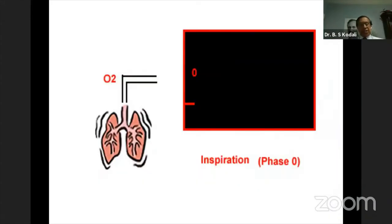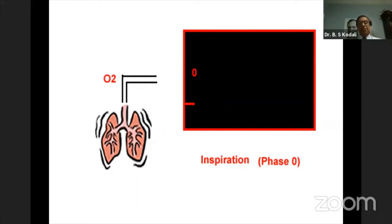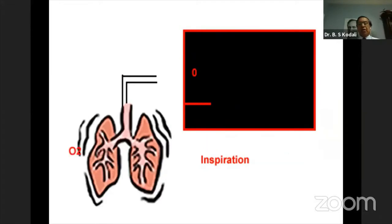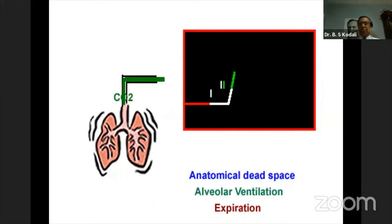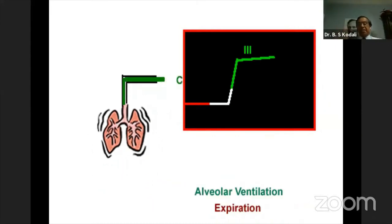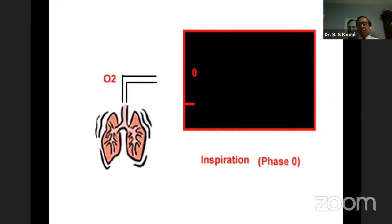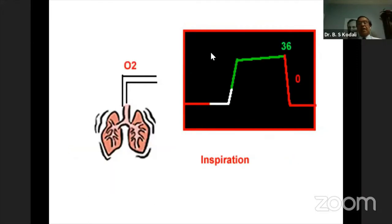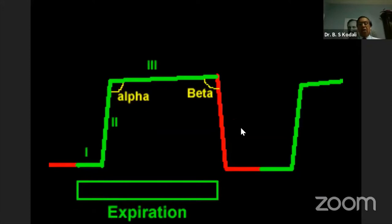Understanding the physiology of capnography makes it much easier to apply clinically. When you breathe out, initially there is no CO2 because those are dead space gases. Then dead space gases mix with alveolar gases, causing an elevation in CO2 concentration, followed by the alveolar plateau from all alveoli. Then when you take the next breath without CO2, the concentration falls dramatically — this is how your capnogram looks.